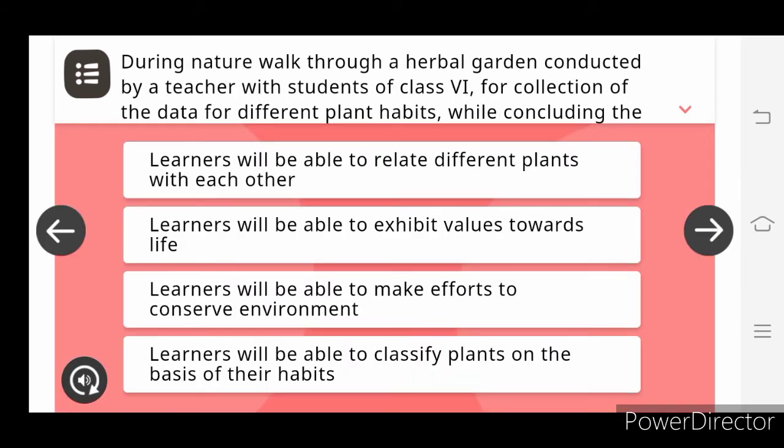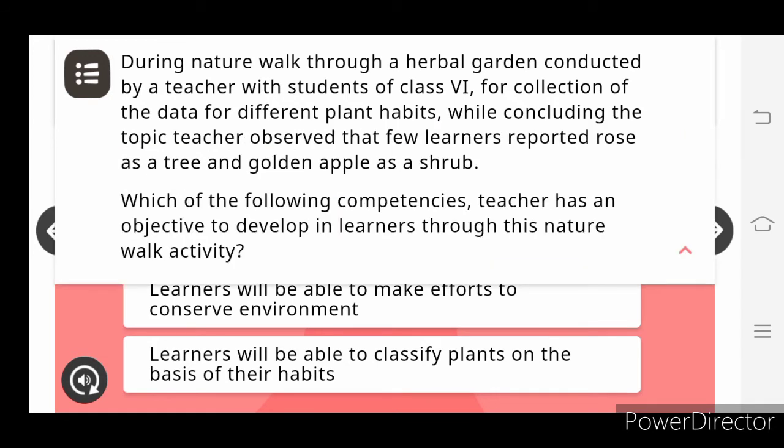The next question we have here: during the nature walk through a herbal garden conducted by a teacher with student of class 6 for collection of data for the different plants, while concluding the topic, teacher observed that few learners reported rose as a tree and golden apple as a shrub. Which of the following competencies teacher has an objective to develop in learners through this nature walk activity?